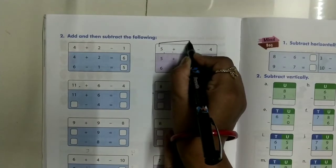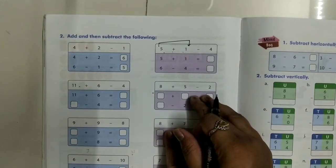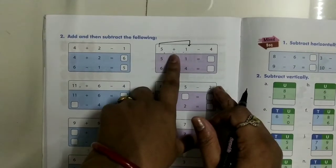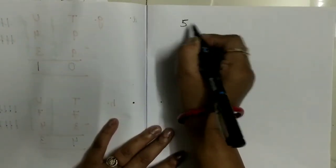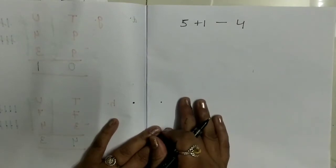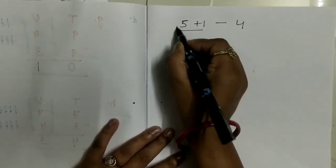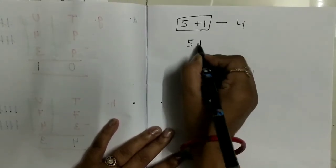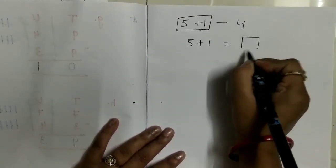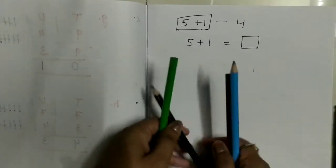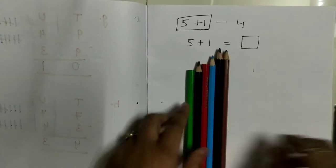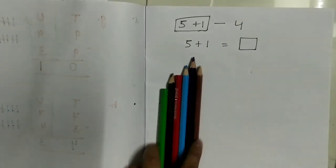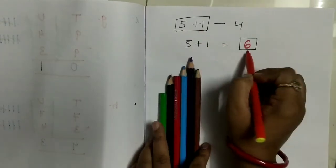How do we solve 5 plus 1 minus 4? Children, firstly you have to perform the addition. So 5 plus 1 minus 4 — first step: add 5 plus 1. 5 plus 1 equals 6, so write down 6.